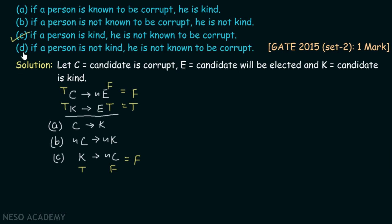You can also check option D: if a person is not kind, he is not known to be corrupt (¬K → ¬C). You will find that it is possible to make all the premises true and the conclusion false, so option D is not a correct conclusion from these premises.